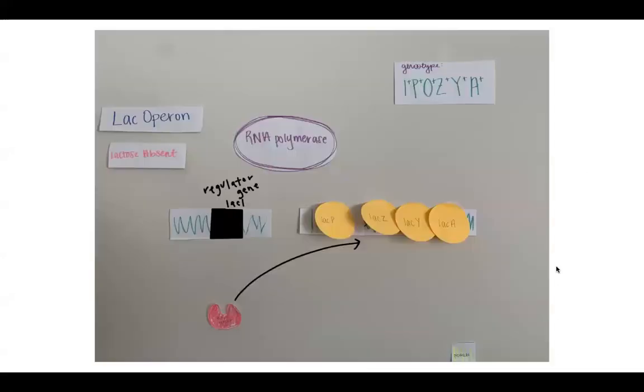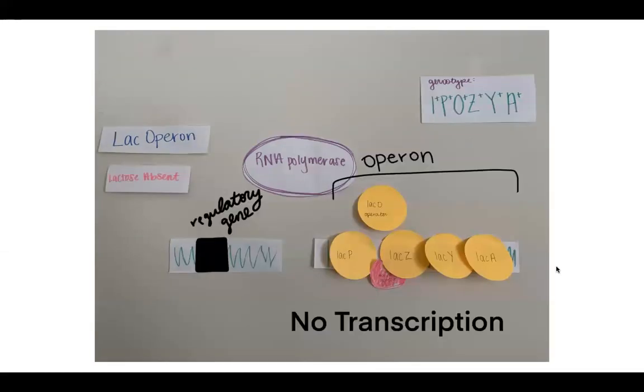Now our first example does not have lactose present. So the regulatory gene, lac I, will code for the repressor, which is the active regulator protein we need for transcription. The operator, lac O, blocks RNA polymerase from transcribing the gene. So no protein products will occur thus far, but it will interact with the repressor. However, no transcription will occur.